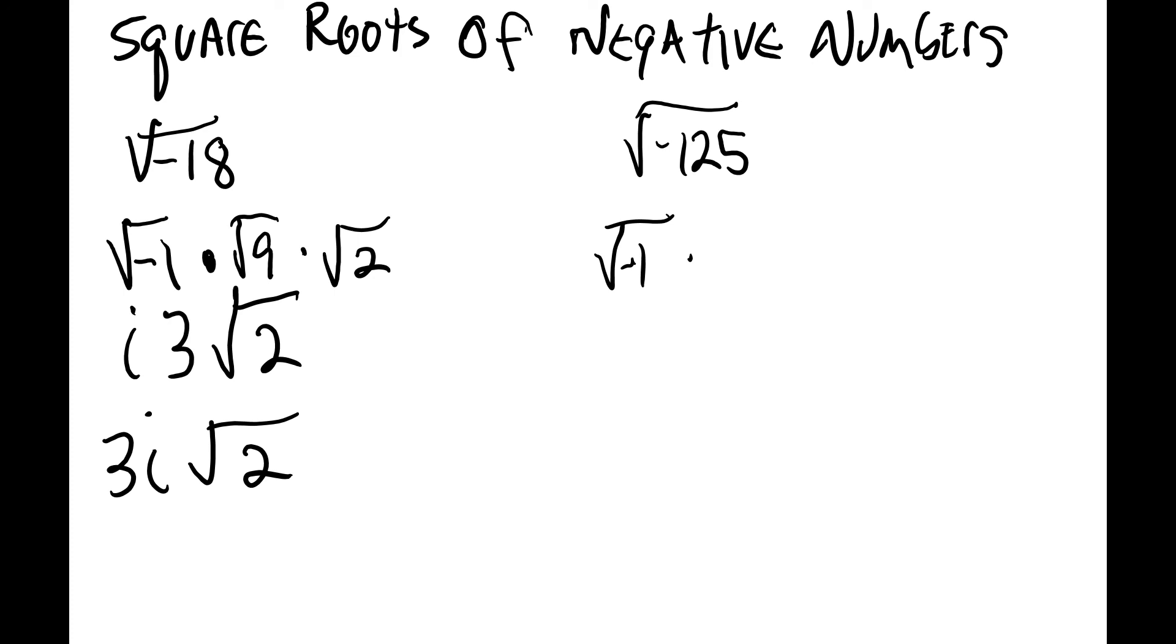So then I can say that this is the square root of negative 1 times the square root of 25 times the square root of 5, and then I can simply write this as 5i square root of 5. All right, there we go. Not too bad, is it? It'll get worse.